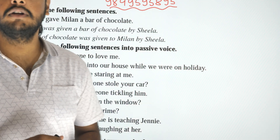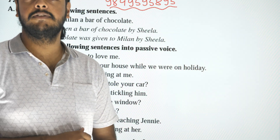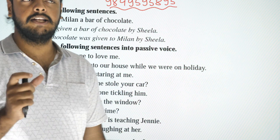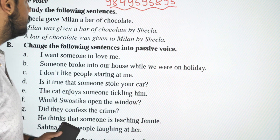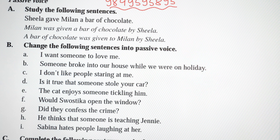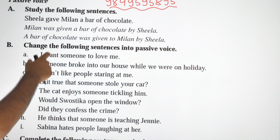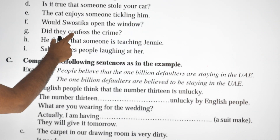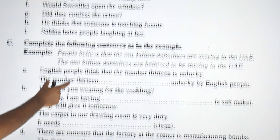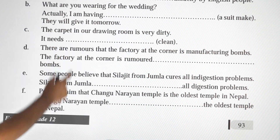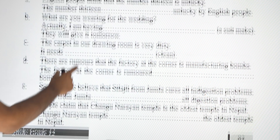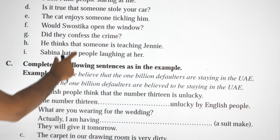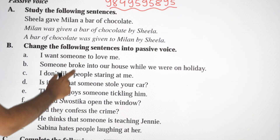Hello everyone, welcome to this video. This is a Class 12 Unit Love and Go active-passive question solve. If you have your book with you, see page number 93, Unit Love and Go, your exercise.